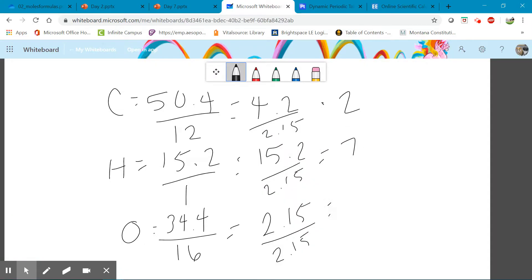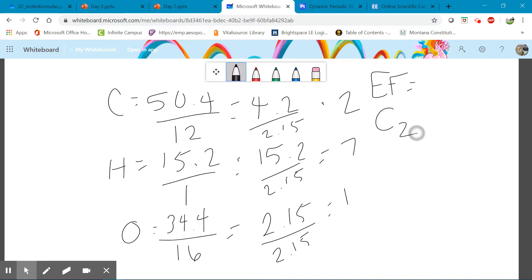And then of course 2.15 divided by 2.15 is 1. And so then this becomes your empirical formula where it's C2H7O. Just O1 because it was only a subscript of 1, so you would leave that off.